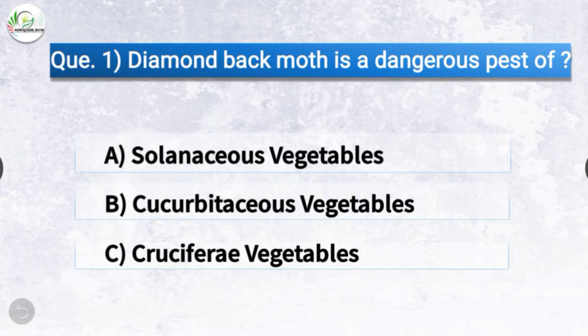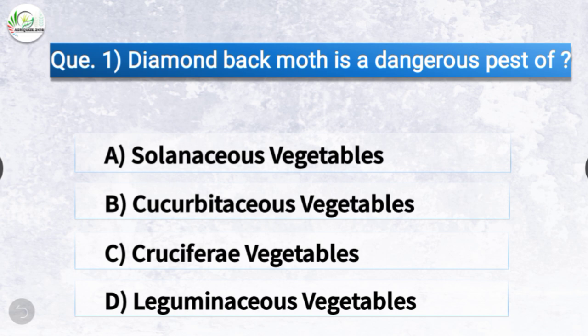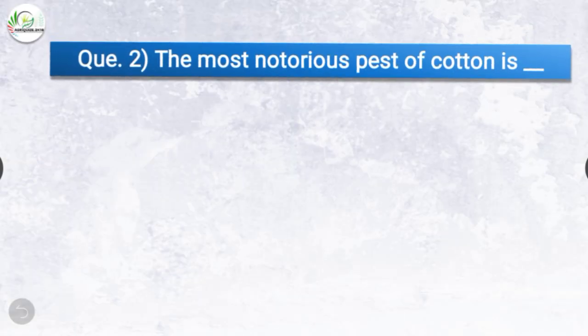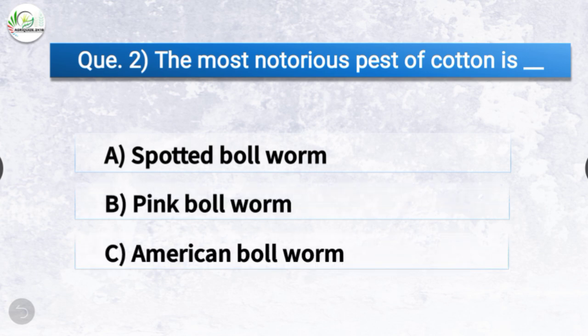Question number one: Diamond back moth is a dangerous pest of which crop? The options are solanaceous vegetables, cucurbitaceous vegetables, cruciferous vegetables, or leguminaceous vegetables. The correct answer is option C, cruciferous vegetables — the diamond back moth is a dangerous pest of cruciferous vegetables.